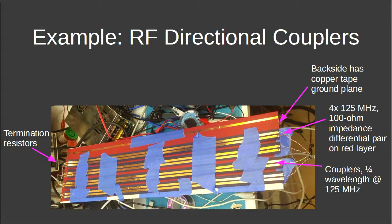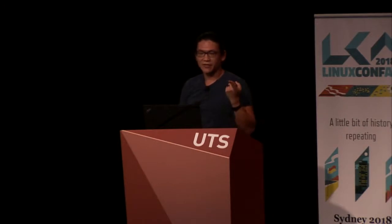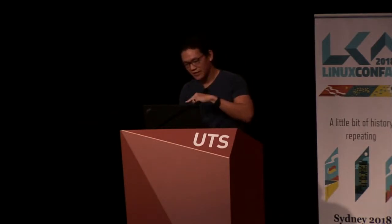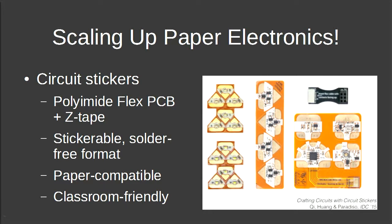Paper electronics can do essentially everything you can do in a circuit board, just slightly larger. However, a key barrier to mass adoption has been that through-hole components require soldering — problematic in classrooms — and surface mount components are small and fussy, about the size of a grain of rice. Meeting with G during a Shenzhen tour, we thought we could combine paper electronics with flex PCBs and anisotropic Z-tape to create a stickable, solder-free, classroom-friendly format.